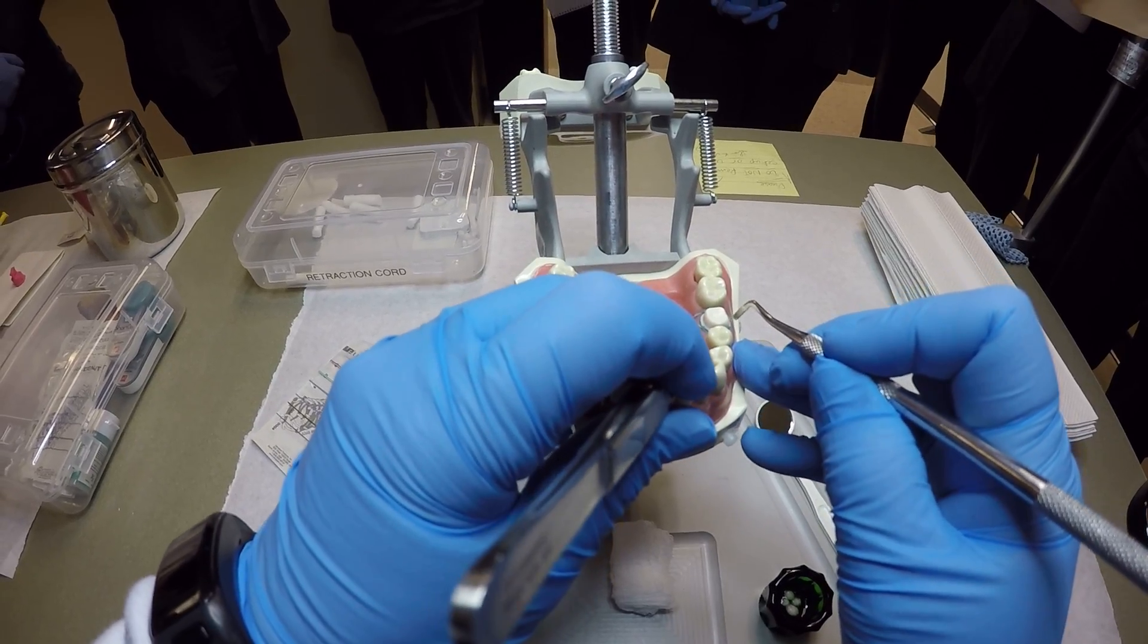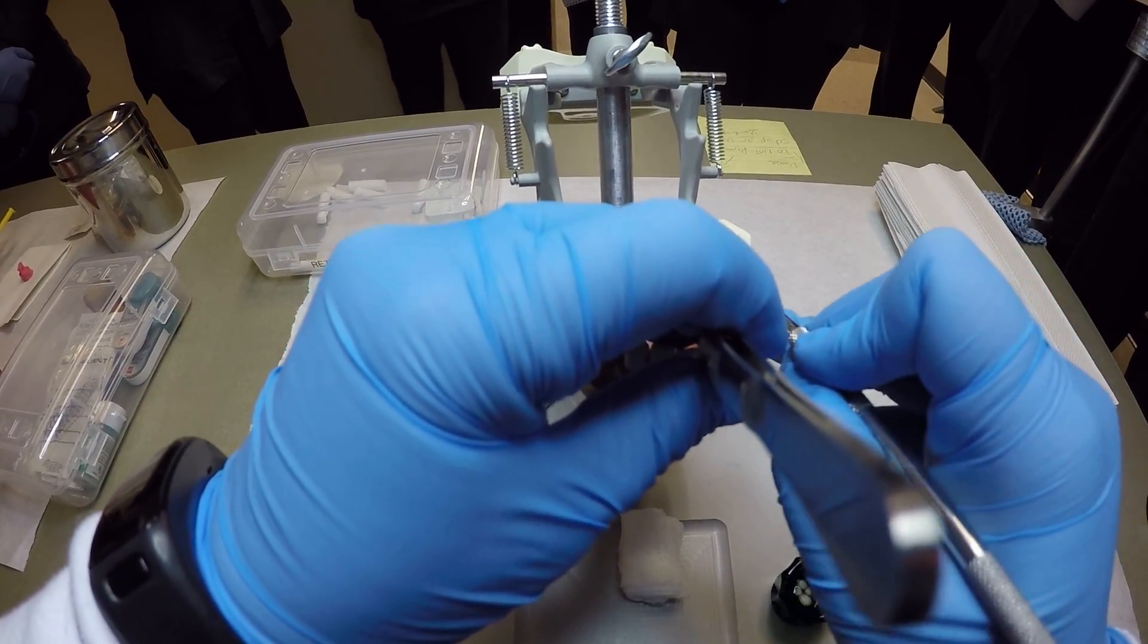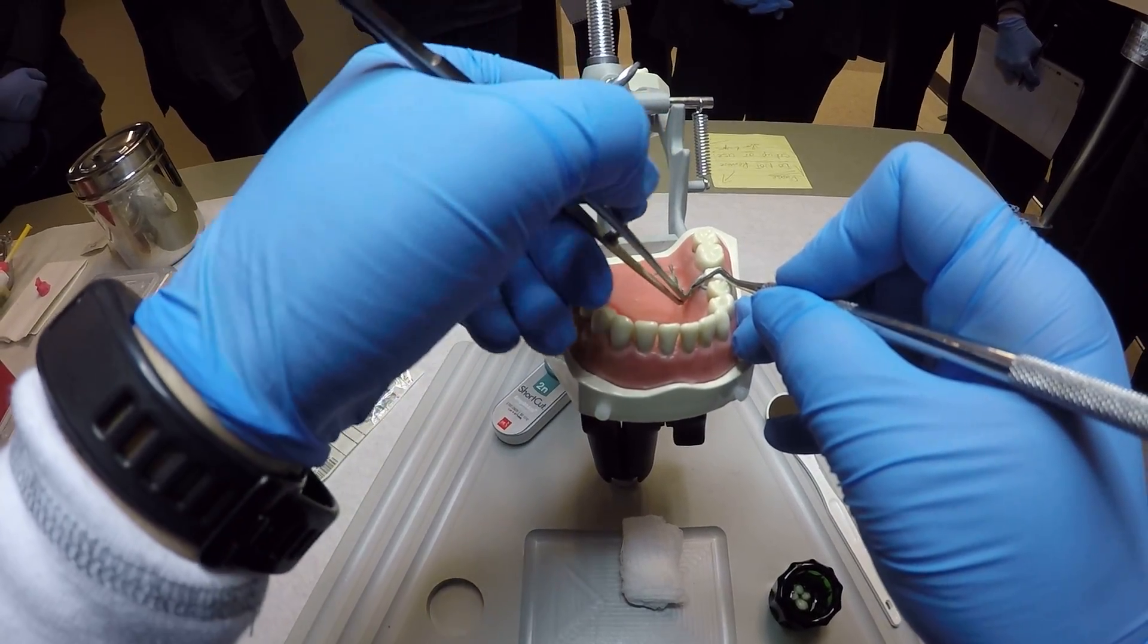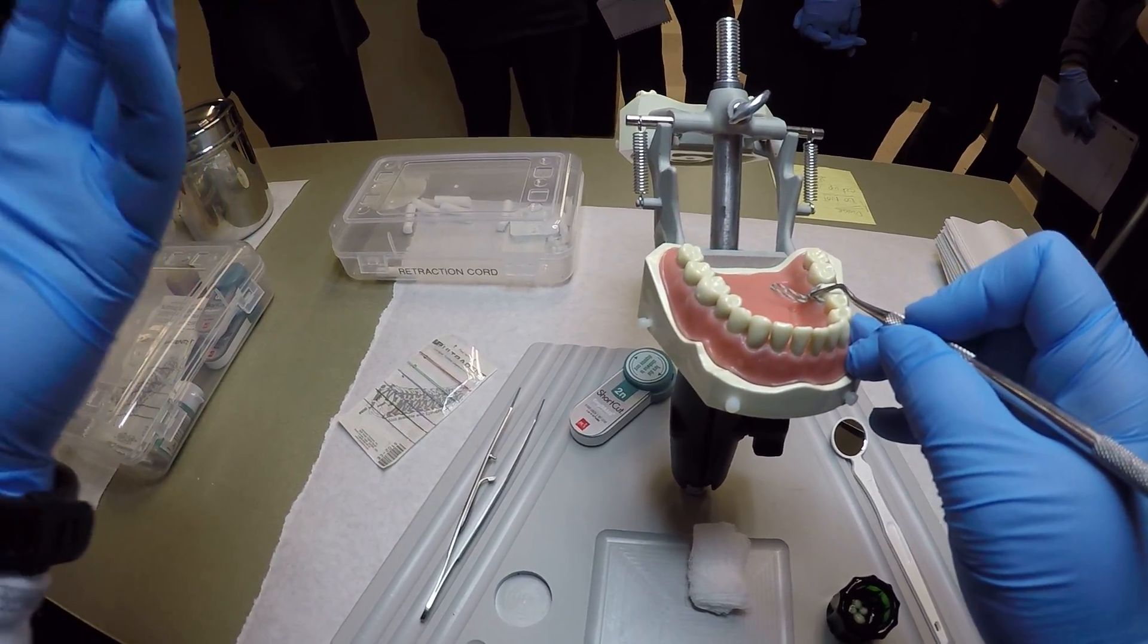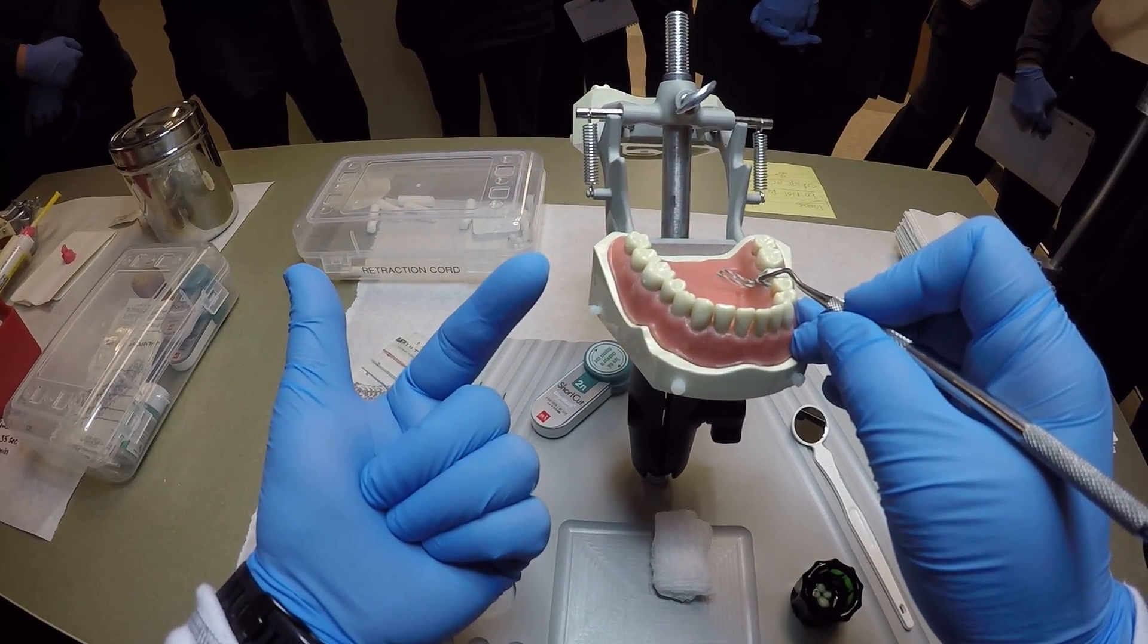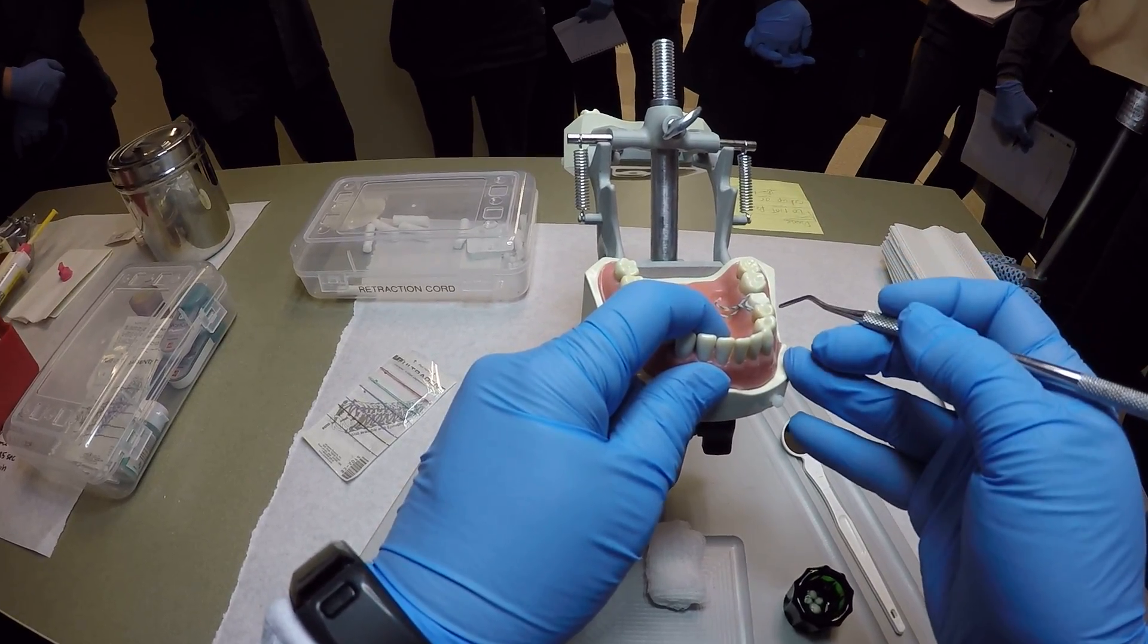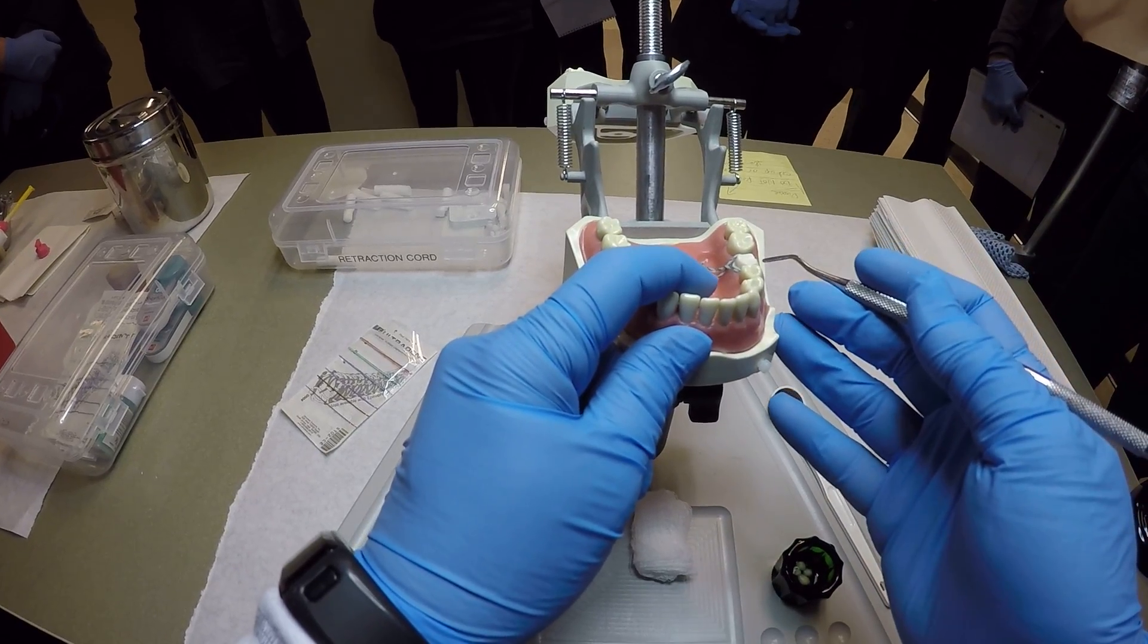And you gently start tucking it in. It should go down one to three millimeters. Start it on the loop bit around there. The tips of the retraction cord end up on the buccal side or wherever the doctor chooses to let them go.